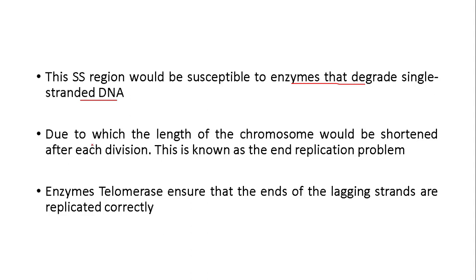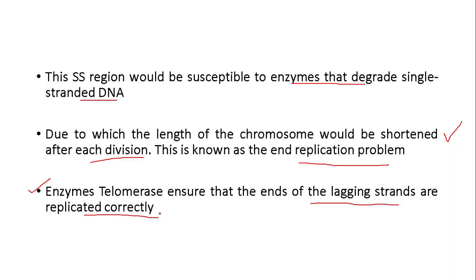Due to this degradation of the single-stranded region, the length of the chromosome would be shortened after each division. This shortening of chromosome length with each division is called the end replication problem, because the actual DNA size is being shortened with every division. There is an enzyme called telomerase which ensures that the ends of lagging strands are replicated correctly and that there is no shortening of the chromosome with each cell division.